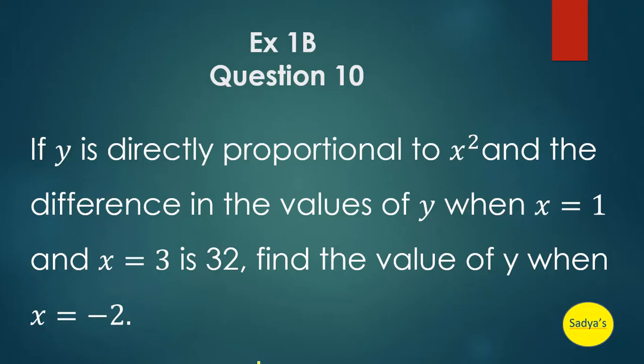The question reads: if y is directly proportional to x squared and the difference in the values of y when x is equal to 1 and x is equal to 3 is 32, find the value of y when x is equal to minus 2.